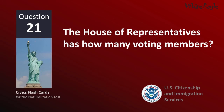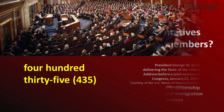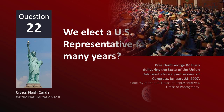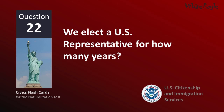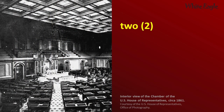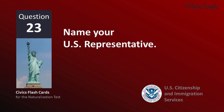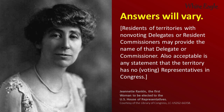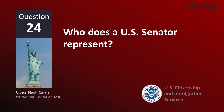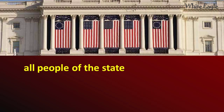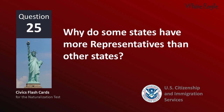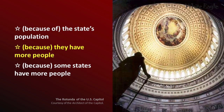The House of Representatives has how many voting members? 435. We elect a U.S. Representative for how many years? 2. Name your U.S. Representative. Answers will vary. Residents of territories with non-voting delegates or resident commissioners may provide the name of that delegate or commissioner, or state that the territory has no voting representatives in Congress. Who does a U.S. Senator represent? All people of the state. Why do some states have more representatives than other states? Because they have more people.